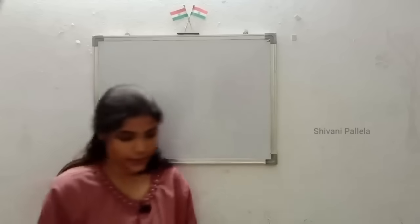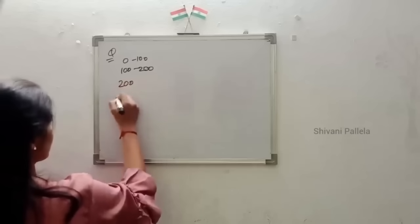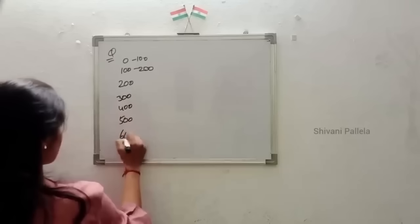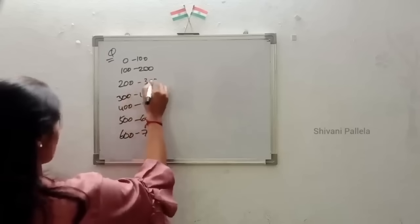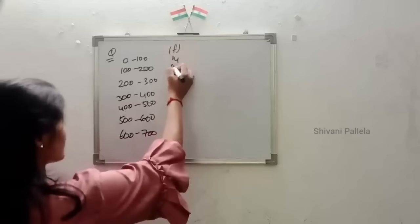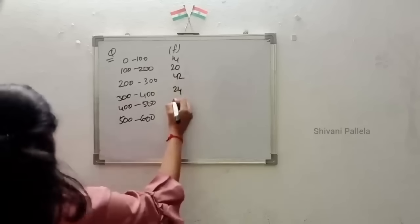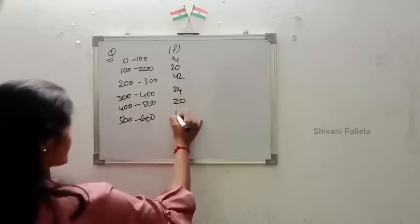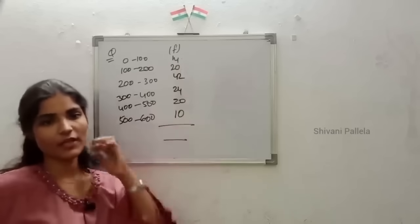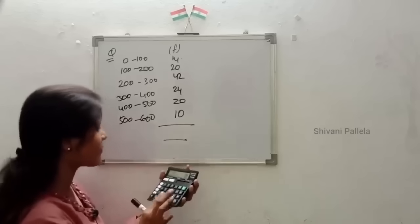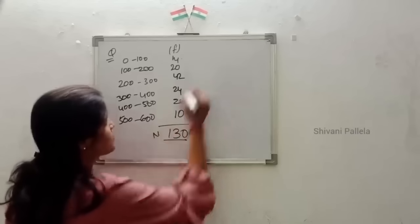If in the question the data is: 0 to 100, 100 to 200, 200 to 300, 300 to 400, 400 to 500, 500 to 600, 600 to 700, and the frequency column they have given as 14, 20, 42, 24, 20, and 10 - calculate arithmetic mean using direct method. N means number of frequency: 14 plus 20 plus 42 plus 24 plus 20 plus 10. N is equal to 130.